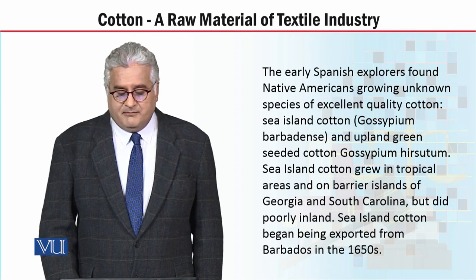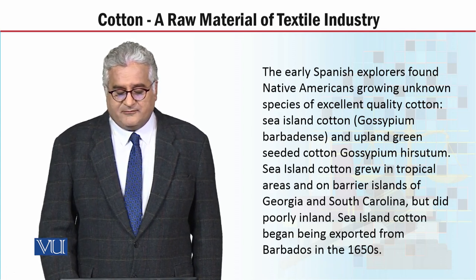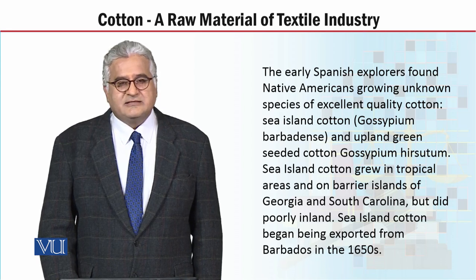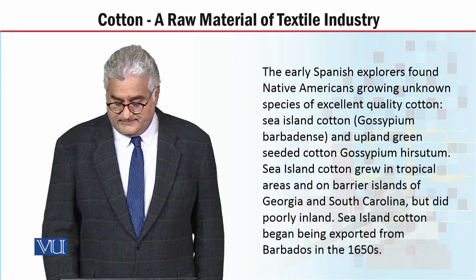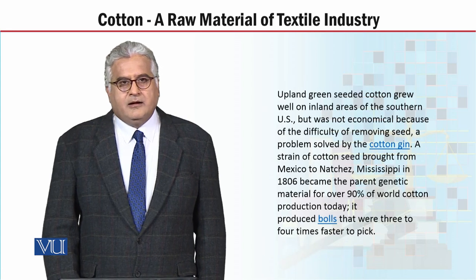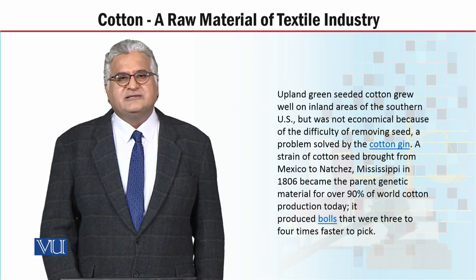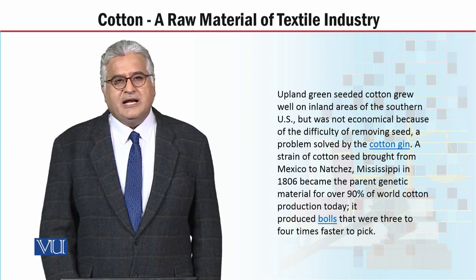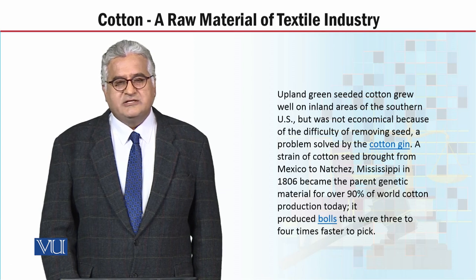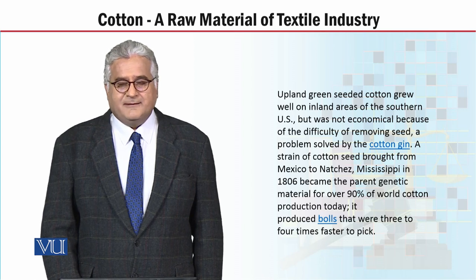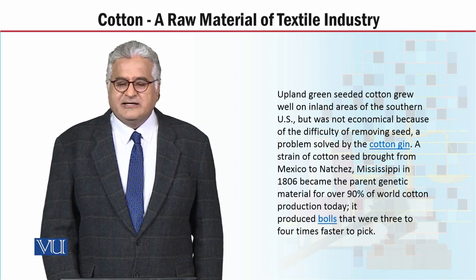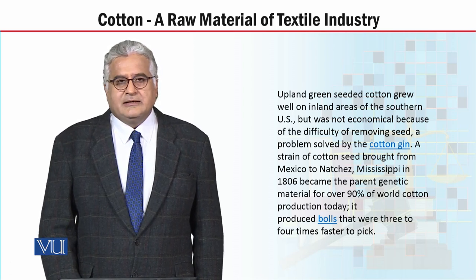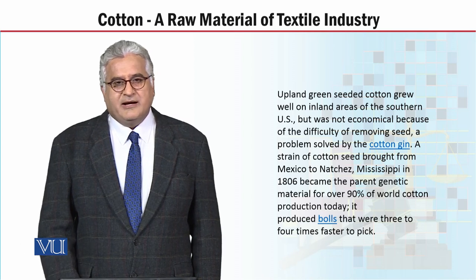My dear students, Sea Island cotton began being exported from Barbados in the 1650s. The industrial revolution was formed, and the raw material was needed for that. This is why they invaded and built the colonies — so that the industrial revolution could have the raw material available to them.